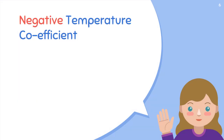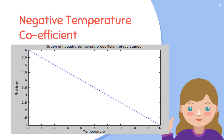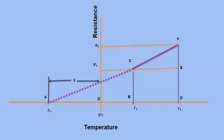Negative temperature coefficient is the one in which resistance decreases with increasing temperature. This graph shows a declined line, which means by increasing temperature resistance is decreasing. This phenomenon usually occurs in semiconductors.